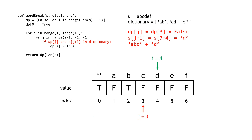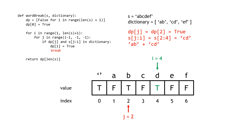For I equals four, we're answering: can we form ABCD? DP[3] is false, so we move on. Then J is two — DP[2] is true, meaning we can form AB as the left side. The right side is S[2:4], which is CD, and CD is in the dictionary. So we can form both sides, and we mark I equals four as true. At this point we can break early since we won't change this slot to false regardless of remaining J iterations.